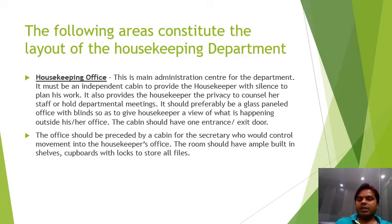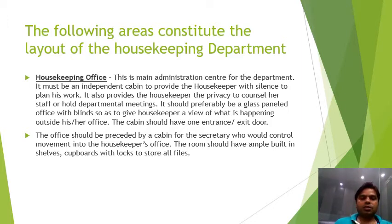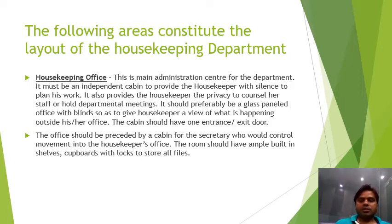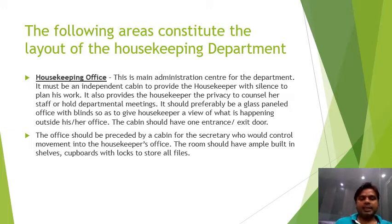The second area, just adjoining the executive housekeeper's cabin, is the secretary's room. The secretary controls the movement of the executive housekeeper's office. The secretary's room must be adjacent to the executive housekeeper's room and should also contain filing cupboards and lockers where the secretary can keep and store all files.